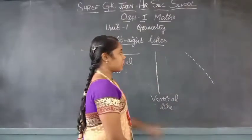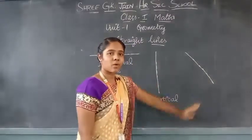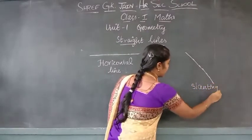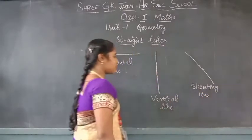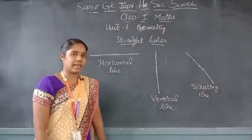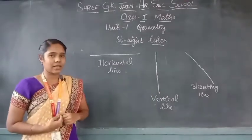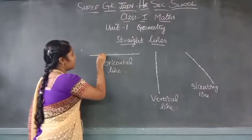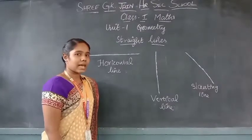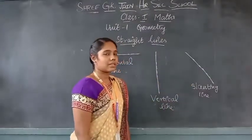One more line is here. Shall we join the dots to get the line? It is going slightly bent. So, what is the name of this line? Slanting line — S-L-A-N-T-I-N-G. Slanting line. What are the three types of straight lines? Horizontal line, vertical line, and slanting line. If it goes from left to right — horizontal line. If it goes from top to bottom — vertical line. If the line is slightly bent — slanting line.